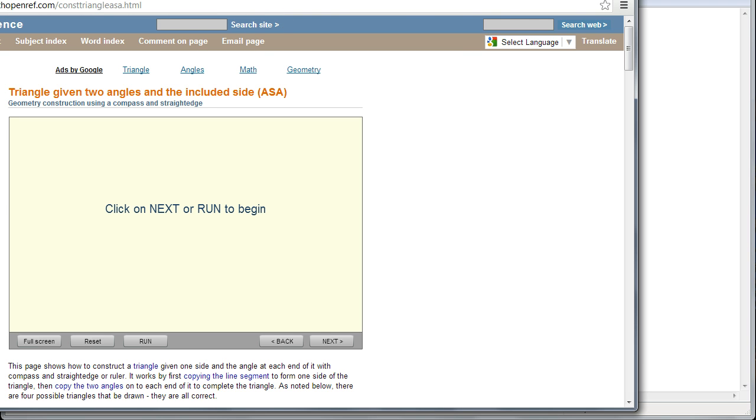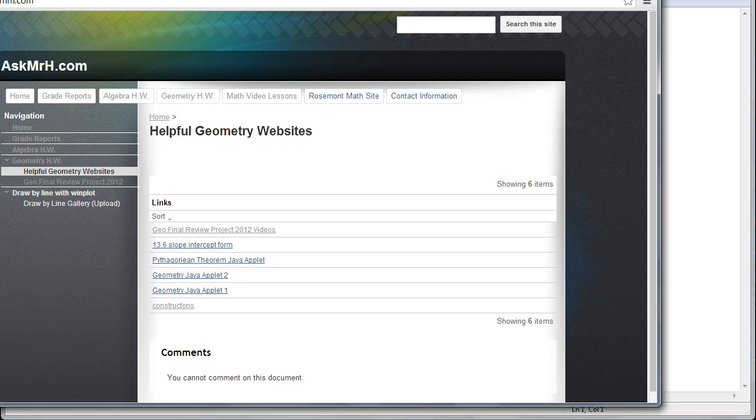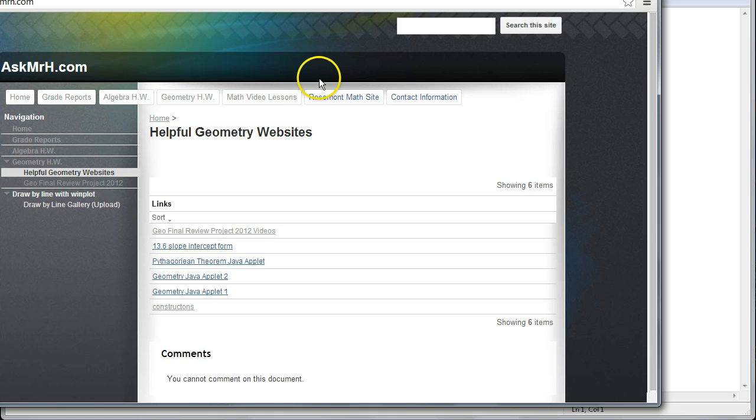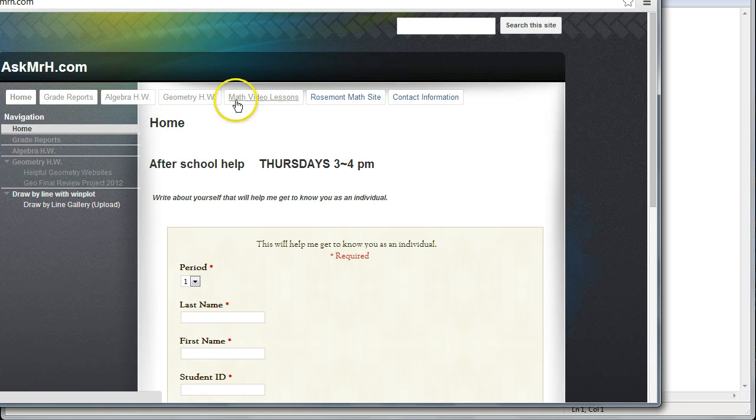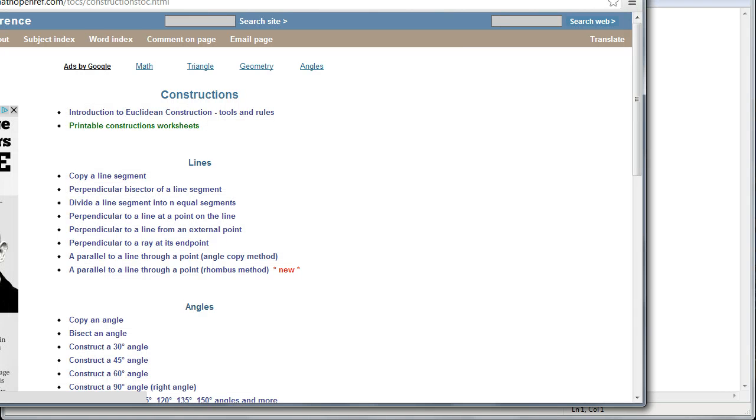Go to my webpage and click the helpful geometry website link. Click on the left side where it says geometry homework underneath. You see the helpful geometry website? Click that, then click constructions and you will get to the construction part.